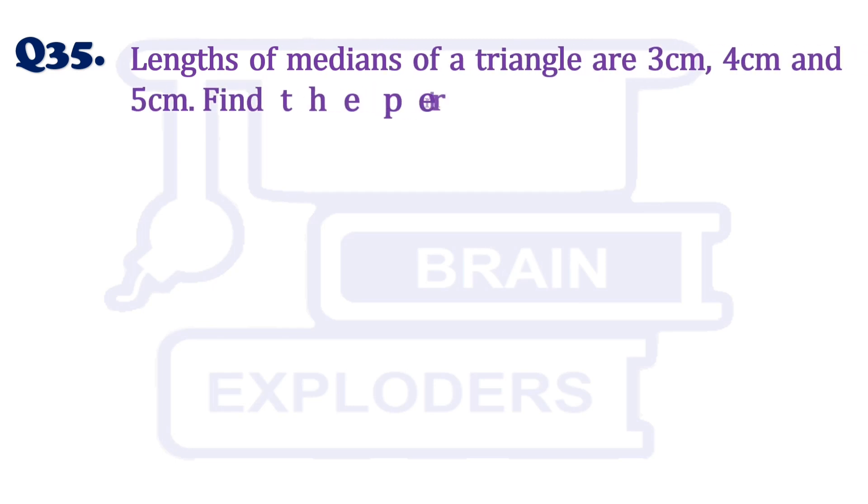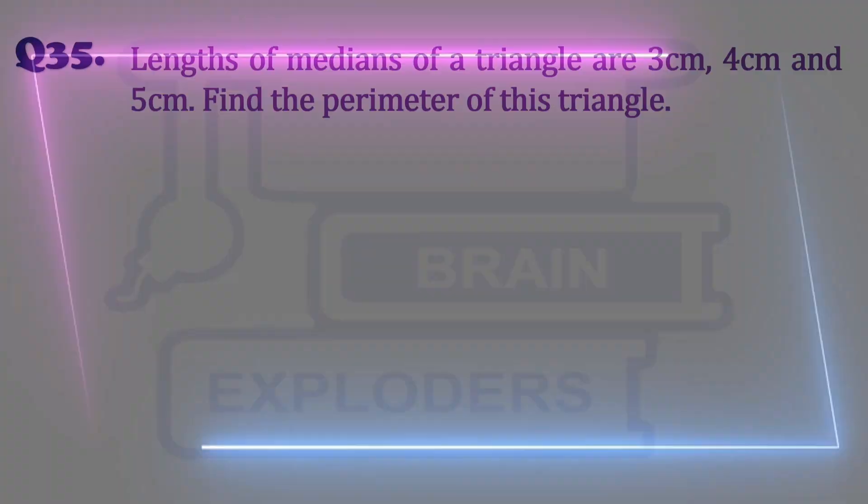Lengths of medians of a triangle are 3 cm, 4 cm and 5 cm. Find the perimeter of this triangle.